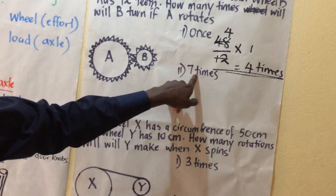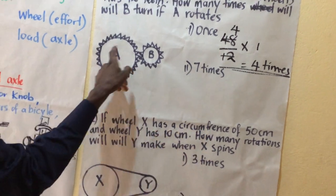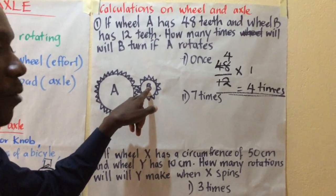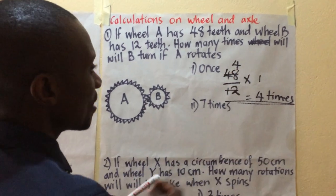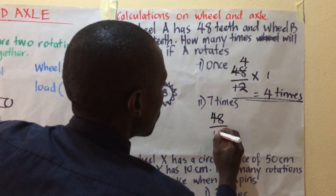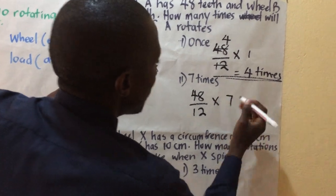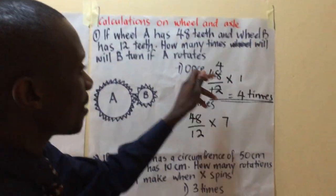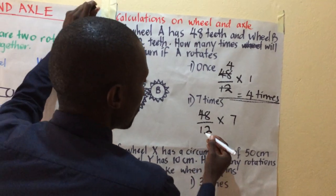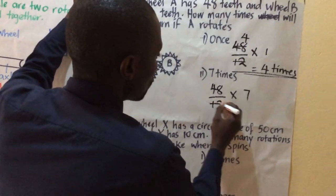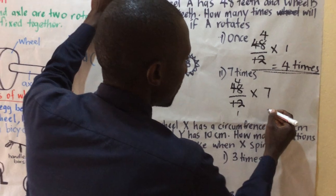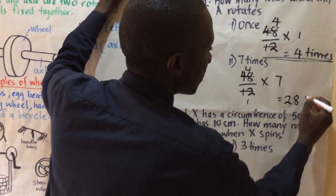In case the big wheel spins seven times, how many times will the small one have spun? We use the same working: 48 divided by 12, times seven this time — that is four times seven — it will have spun 28 times.